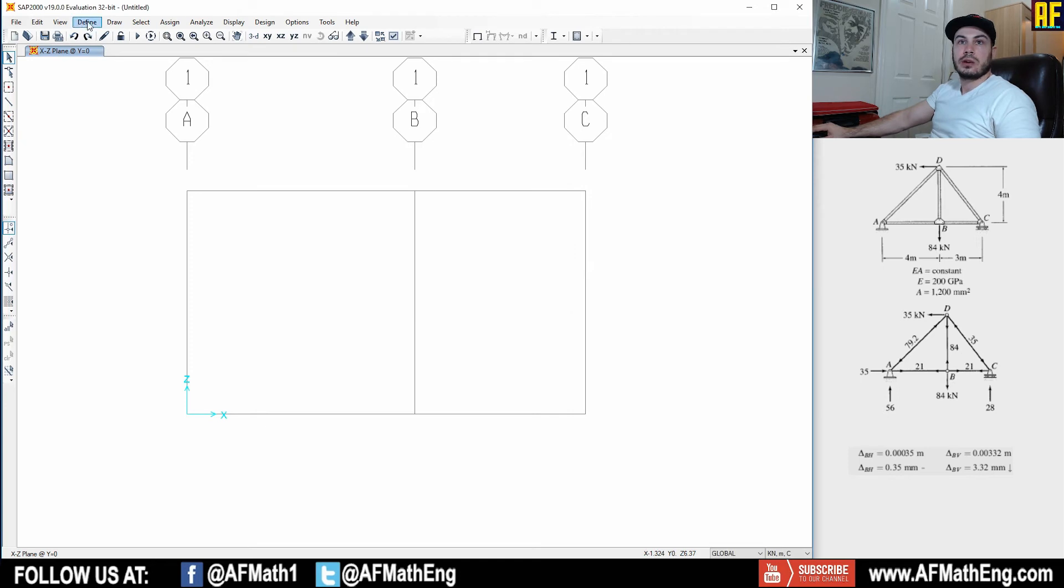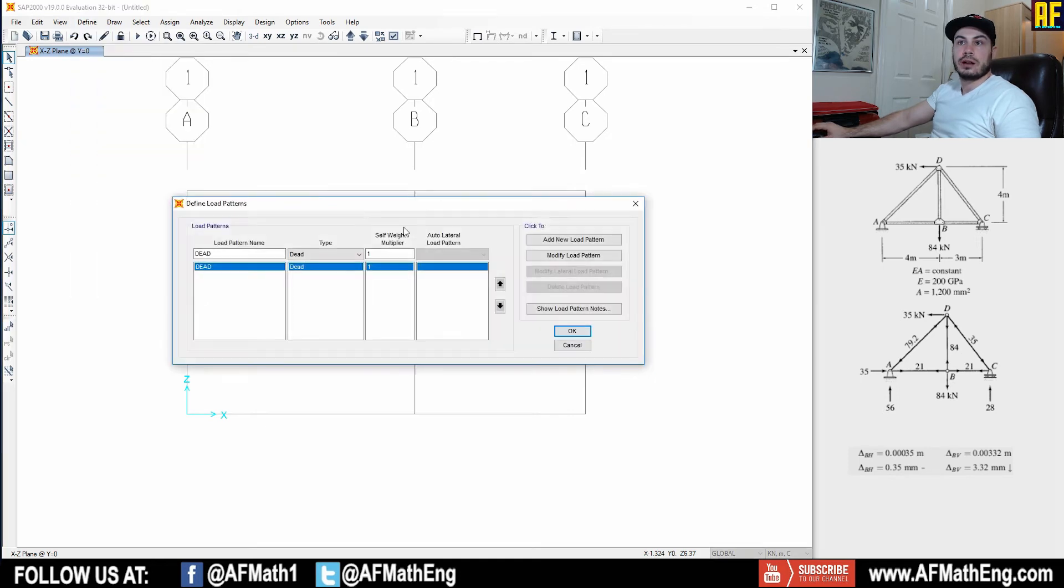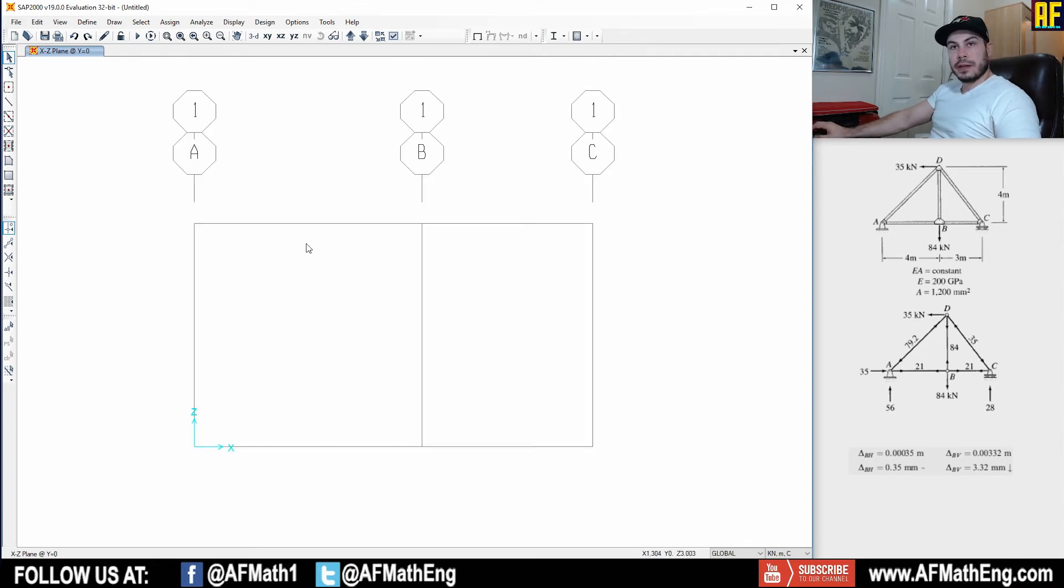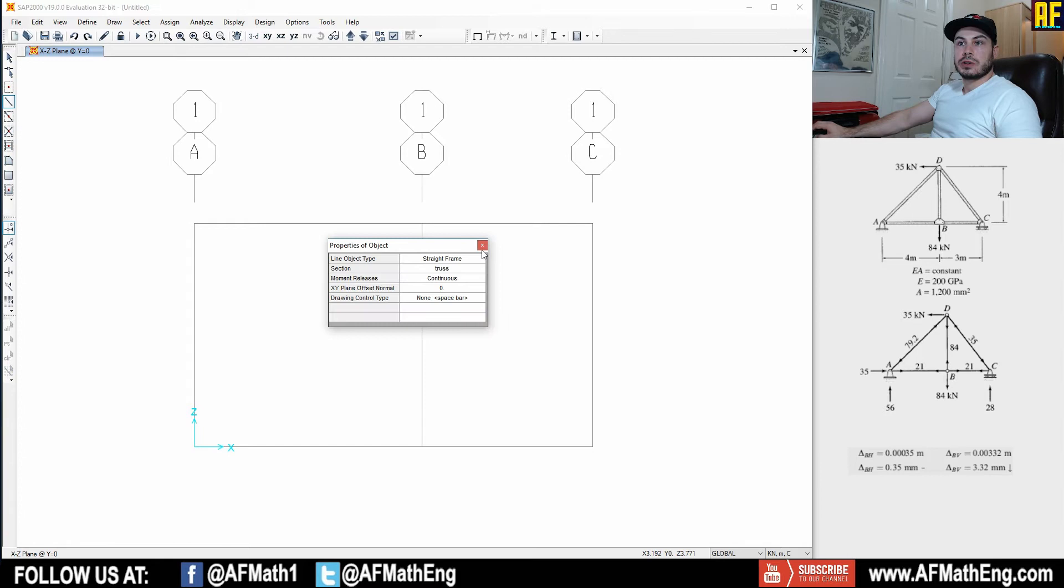And finally, we're going to go to define and we're going to go to our load patterns. And we're just going to make the self weight multiplier zero. I think that's a good habit to get into. And if you don't know why I did that, go back to the last video. I explained it there. Now that we've done that, that's a good start. We're pretty much ready to go.